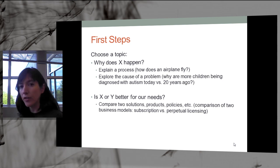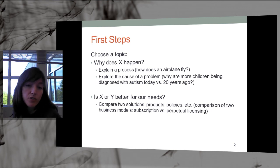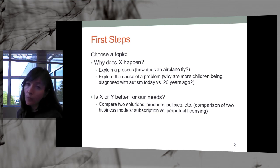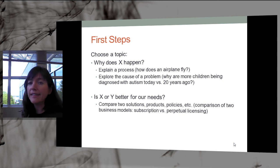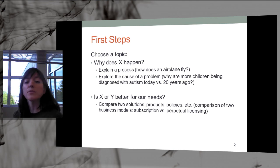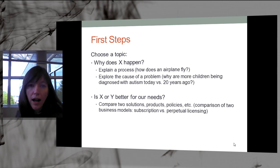Or it could be a report based on proving that one thing is better than another — comparing two solutions, two products, or two policies. You could determine one as better than the other, or leave the report open-ended, presenting what option A offers and what option B offers. For example, you could compare two business models like a subscription model versus a perpetual licensing model — which is better, why, and for what company.